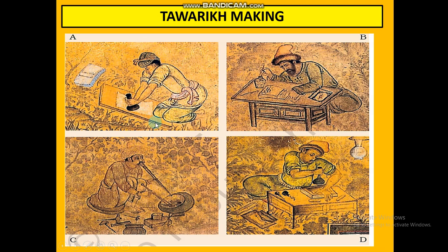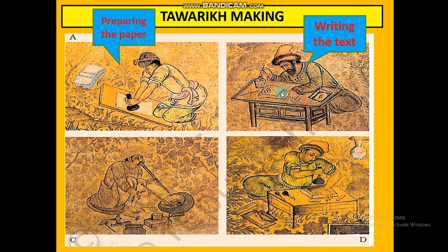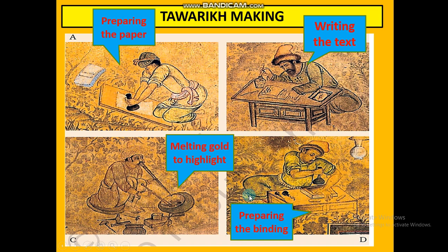The process of making Tawarikh involved four stages: first, preparing the paper by flattening it; second, scribes writing down the history or content on these papers; third, melting gold to highlight important things — like a ruler's name or wars won — because there were no highlighters at that time; and fourth, binding all the pages together to make one complete book.